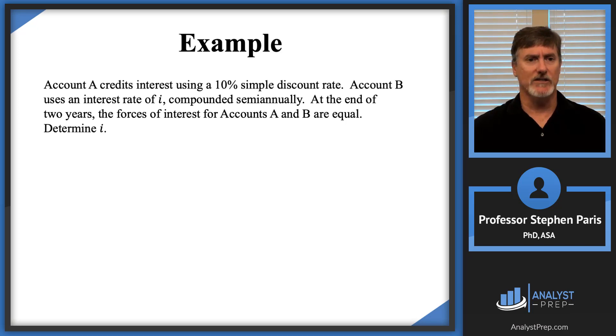So let's re-read the problem and be paying careful attention to the details. The first sentence, account A credits interest using a 10% simple discount rate. I'm okay with that. Account B uses an interest rate of I compounded semi-annually. I have a little bit of a problem with that because the I, when we see I, we generally reserve I for a periodic effective interest rate.